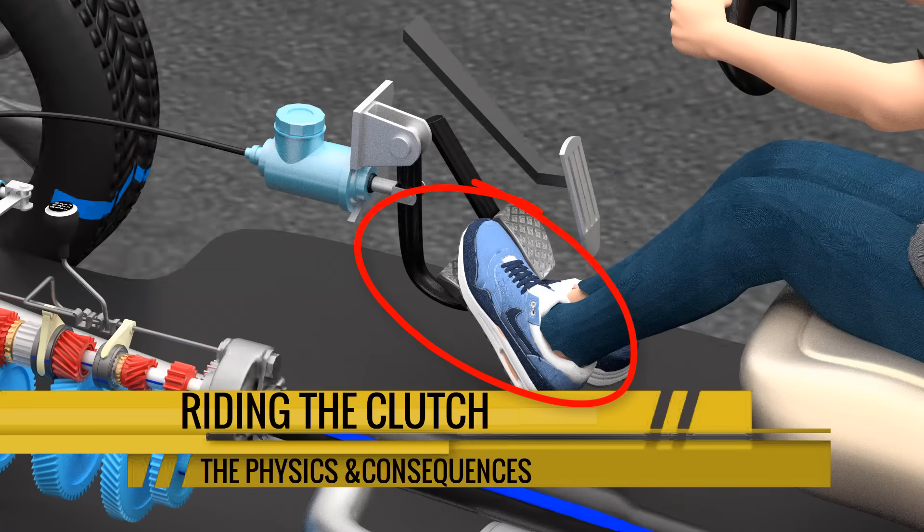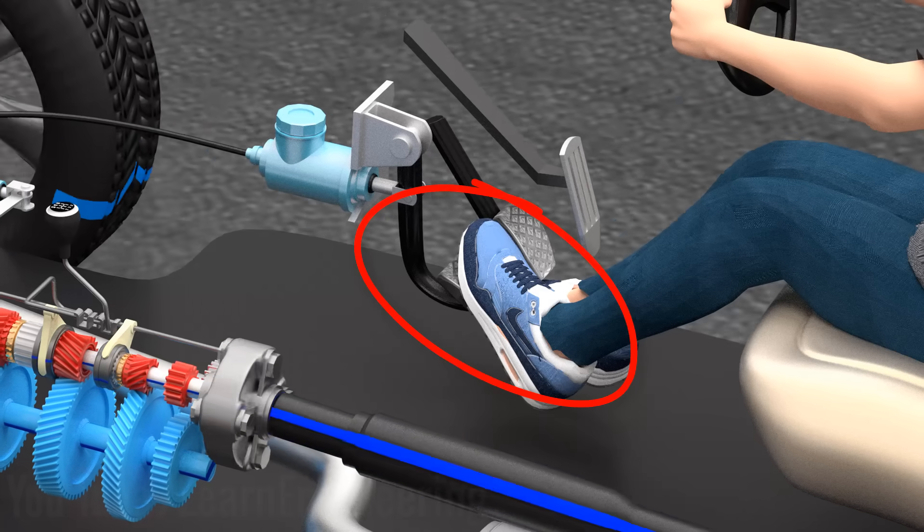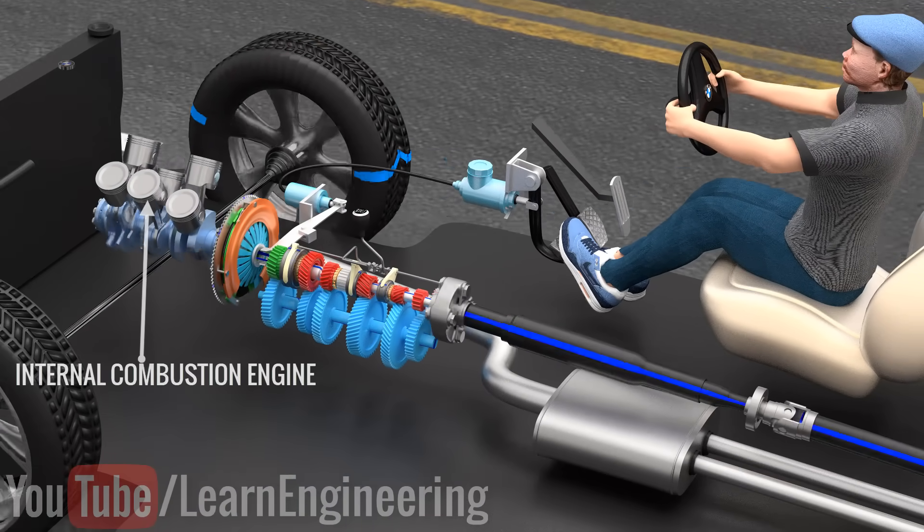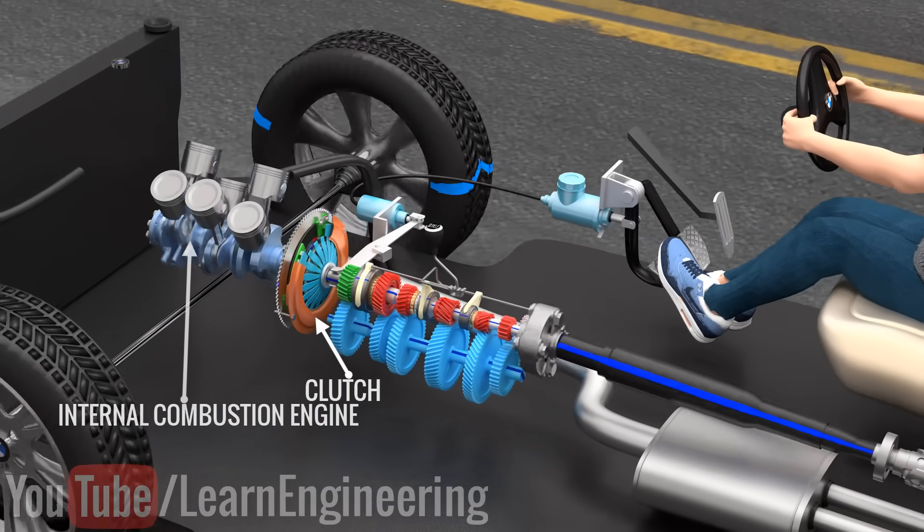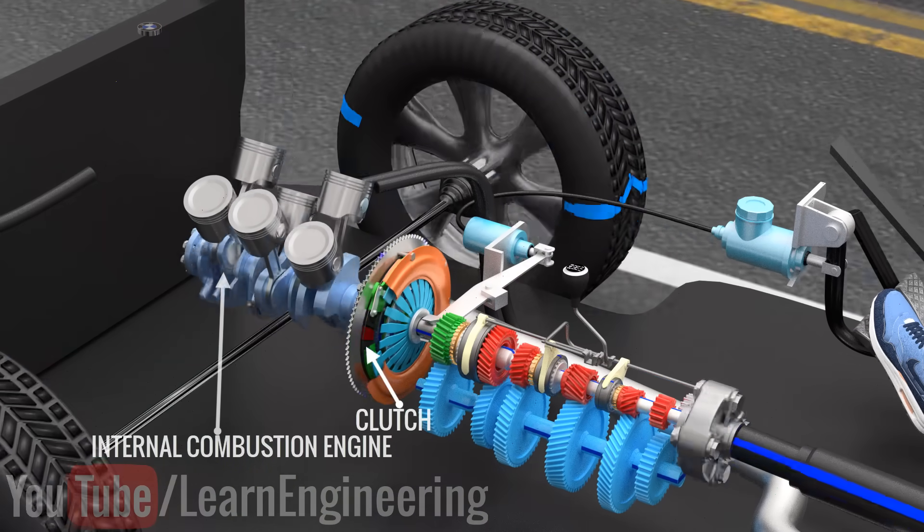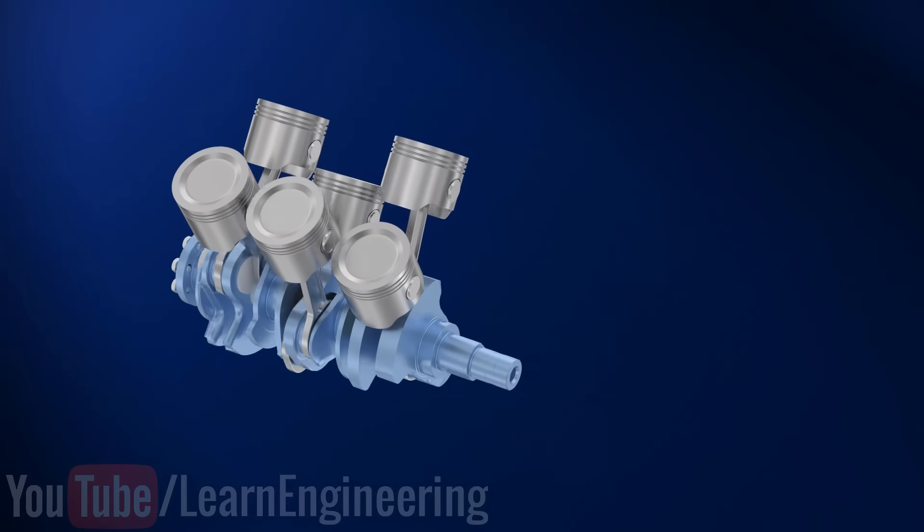In order to understand how a partially pressed clutch can help the engine operate more smoothly, but also why this habit can damage your car, we first need to learn the basics of the operation of an internal combustion engine and also of the clutch. The engine is the muscle of a car. It produces the necessary driving force to move the vehicle.